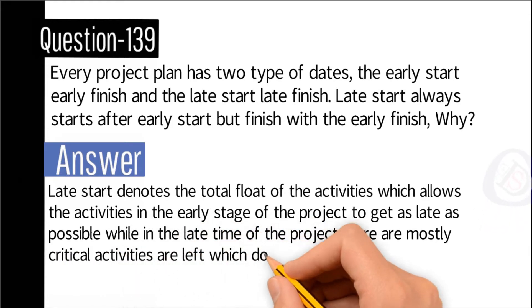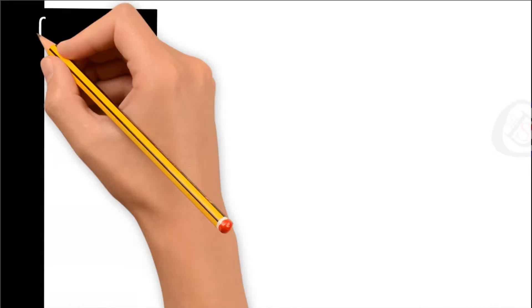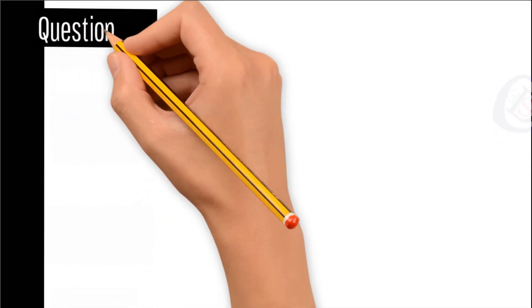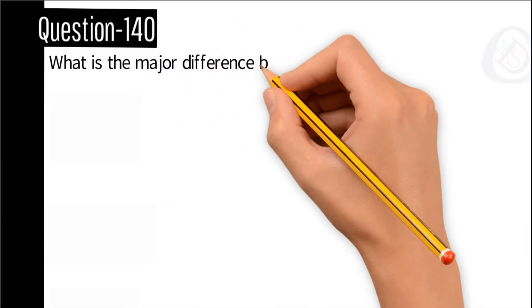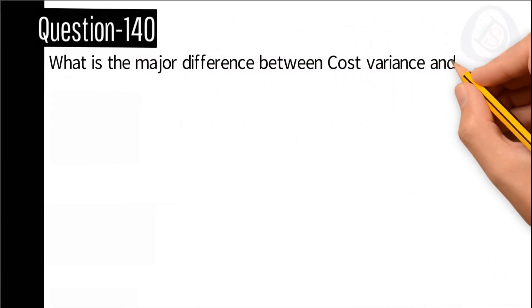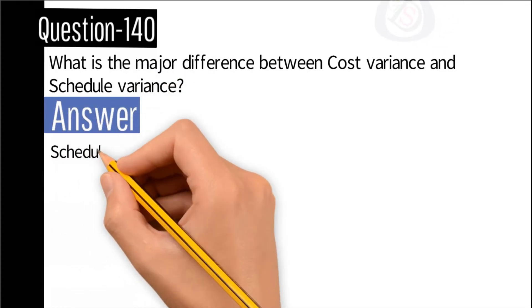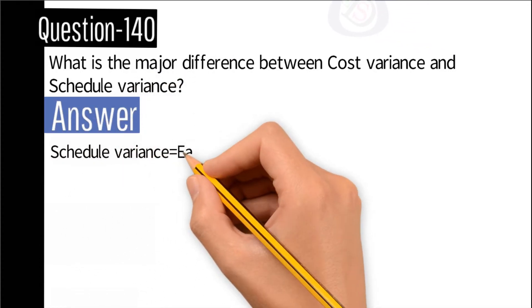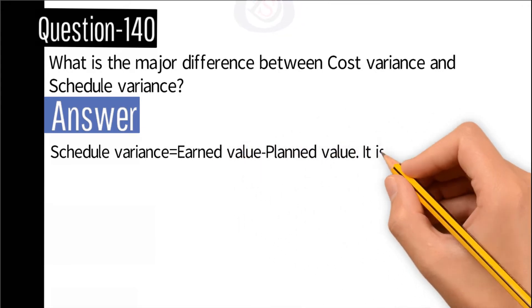Question number 140: What is the major difference between cost variance and schedule variance? Answer: Schedule variance equals earned value minus planned value. It is related to the time or data date. Cost variance equals earned value minus actual cost.